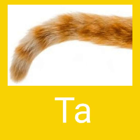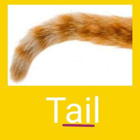Seventh one: tail. T-T — here two vowel letters come together, so this sounds A-L-T. Tail. T-A-L-T, tail.